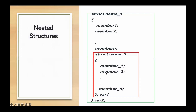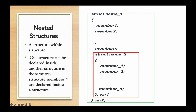We also need to look at nested structure. A nested structure means placing a structure within another structure — that is, closing or embedding one structure inside another. The inner structure will be declared inside the outer structure, and the structure members are declared inside accordingly.